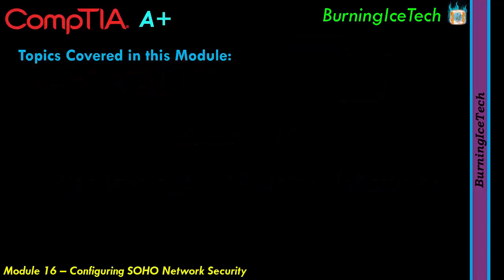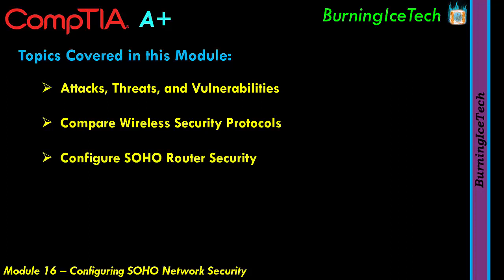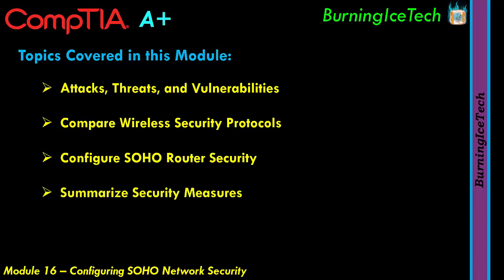So what is in store for today's module? There are four main sections. The first one is Attacks, Threats and Vulnerabilities. The second main section is Compare Wireless Security Protocols. The third section is Configure Small Office Home Office Router Security. And the fourth and the last one is Summarize Security Measures, where we're just going to do a bit of a summary of some random security stuff.